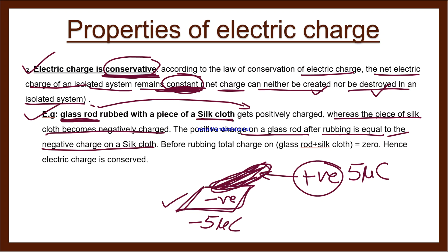This positive charge on the glass rod after rubbing is equal to the negative charge on the silk cloth. Suppose 5 microcoulomb charge came here and minus 5 microcoulomb came here. Here plus, here minus - both are equal. Before rubbing, the charge on glass rod and silk cloth is equal to zero. The sum of both will be zero. Plus 5 microcoulomb minus 5 microcoulomb - both cancel out with each other. When both cancel out, the answer we get is zero. Hence electric charge is conserved.